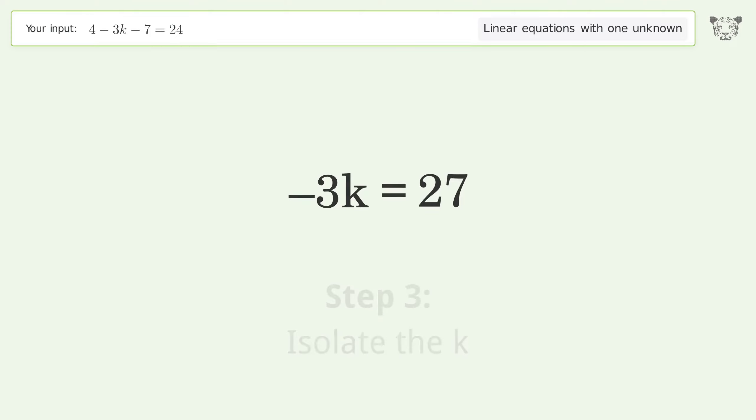Isolate the k. Divide both sides by negative 3. Cancel out the negatives. Simplify the fraction.